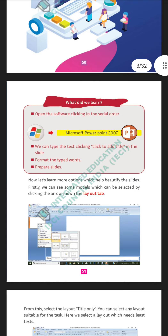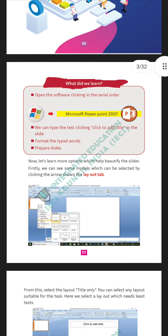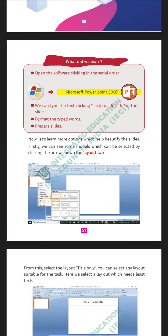Previously we studied how to open PowerPoint software the same way as we opened MS Word and MS Paint — click the Start button, then Microsoft PowerPoint 2007 or 2010 or 2017. We can add text by clicking 'click to add title' in the slide. When opening PowerPoint, we get different layouts, and if we want to add a title we can type the text by clicking 'click to add title'.